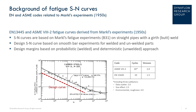The design SN curve is based on smooth bar experiments for welded and unwelded parts. The design margins are based on probabilistic and deterministic approaches, depending on the type of part. The experimental values were fitted using curves, and safety margins were applied on top to obtain the design SN curve. The safety margins included 20 on cycles and 2 on stresses for the ASME code, and 10 on cycles and 1.5 on stresses for the EN code.